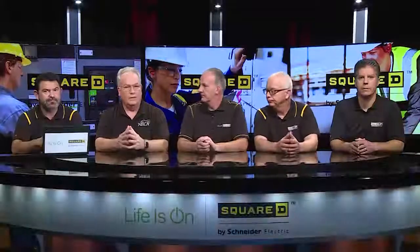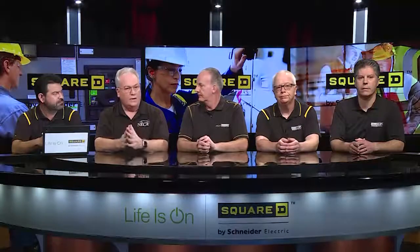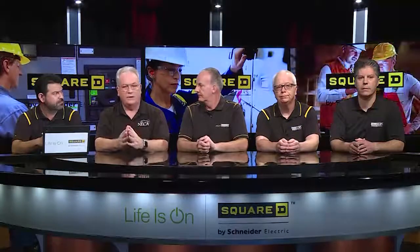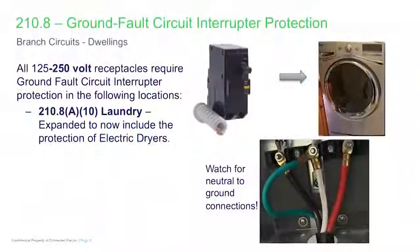The laundry spaces in a dwelling unit have been impacted by the driving language that expanded the GFCI requirement from 125-volt to the 250-volt level. That's a significant impact and now would include dryers, in addition to any 125-volt 15 or 20-amp receptacles.